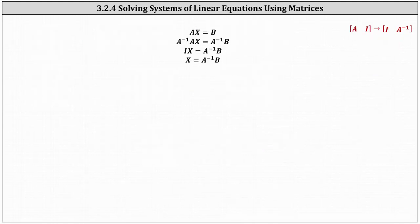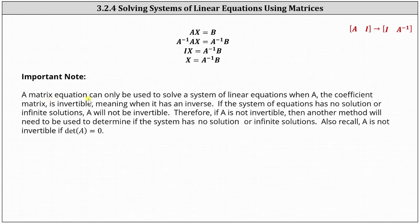There is an important consideration when trying to solve a system of linear equations using a matrix equation. A matrix equation can only be used when A, the coefficient matrix, is invertible — meaning when it has an inverse. We can't find A inverse times B if A inverse doesn't exist. If the system has no solution or infinite solutions, matrix A will not be invertible, and another method will need to be used. Also recall A is not invertible if the determinant of A equals zero.